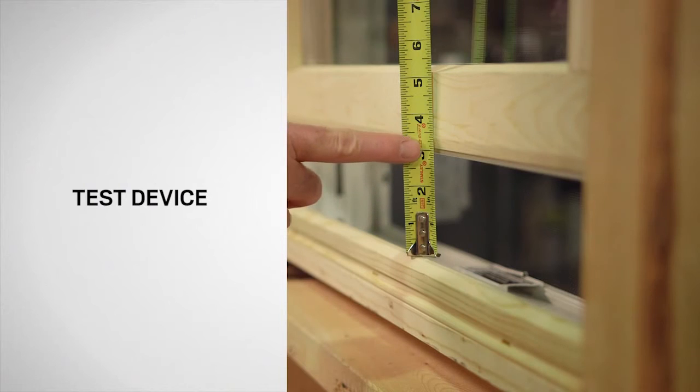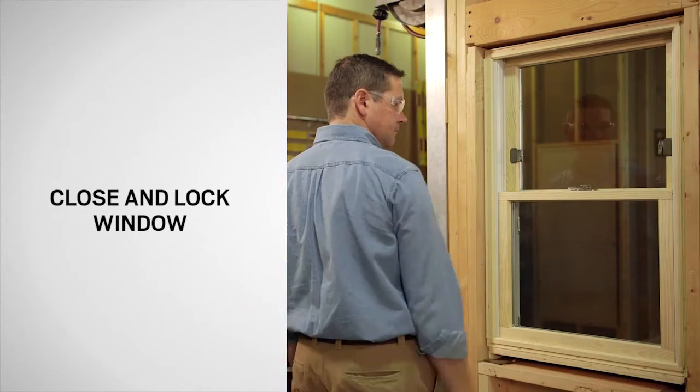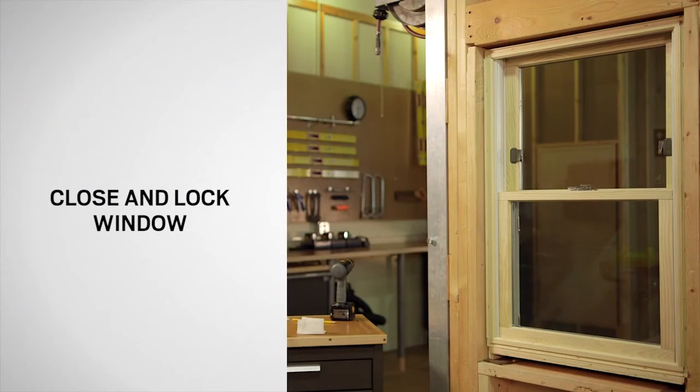The clear opening must be less than four inches. Finally, close and lock the window. Congratulations! You have successfully applied the opening control device on your Anderson 400 Series Tilt Wash window.